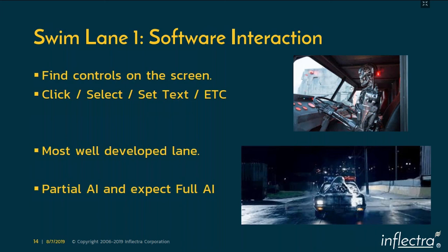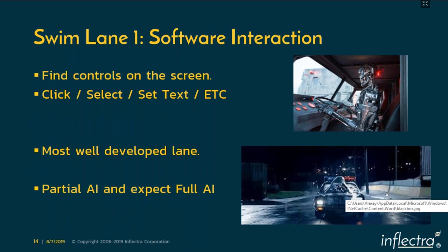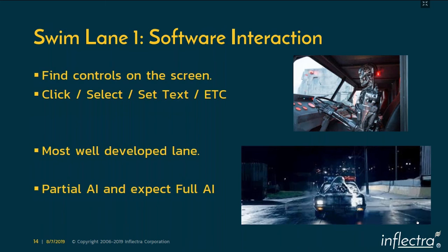An illustration is the difference between white box testing and black box testing. In the first picture, a robot controls the car from inside using regular controls — it's like a driver with a standard interface. In the second picture, the robot cannot get in and has to control the car from outside — like black box testing. We still see such situations in everyday software testing work.